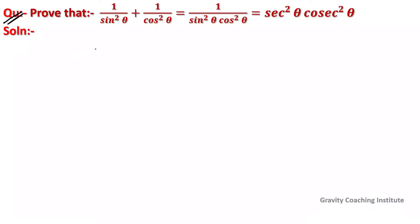Prove that 1/sin²θ + 1/cos²θ = 1/(sin²θ · cos²θ) = sec²θ · cosec²θ. So, LHS is equal to 1/sin²θ + 1/cos²θ.